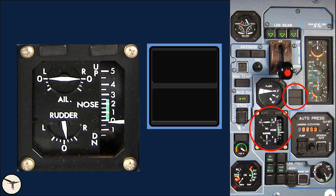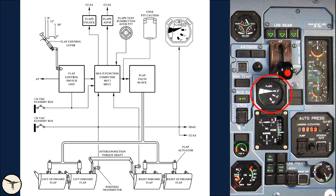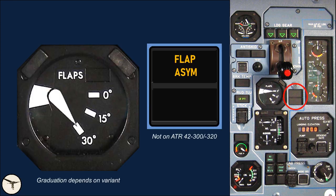Here are the indicators for aileron trim, rudder trim, and nose trim. The nose trim, or pitch trim, must be inside the green arc for takeoff. The pitch trim asymmetric light illuminates when both pitch trim tabs are not synchronized. On ATR 42-300 and 320, the flaps indicator shows the position of the left inboard flaps. The flaps asymmetric light illuminates when the difference between left-hand and right-hand flaps is 6.7 degrees or more; ATR 42-300 and 320 do not have this alert.